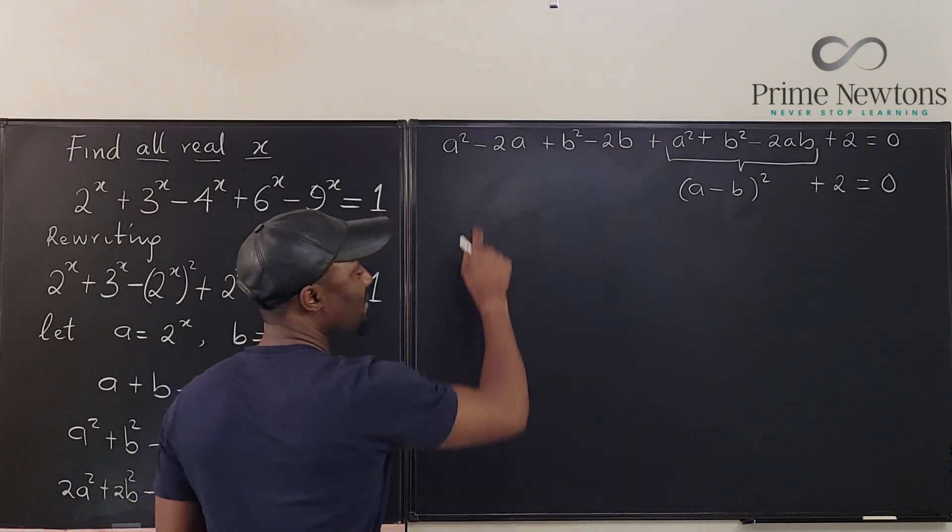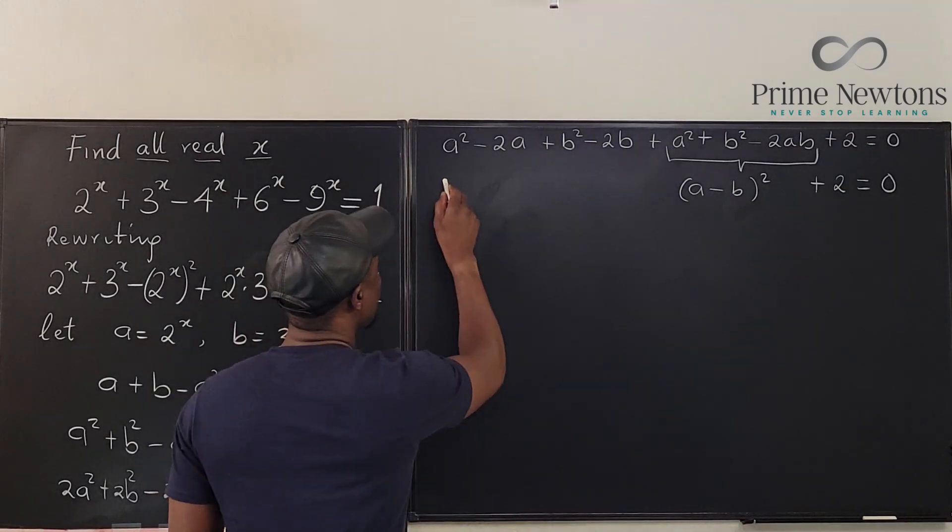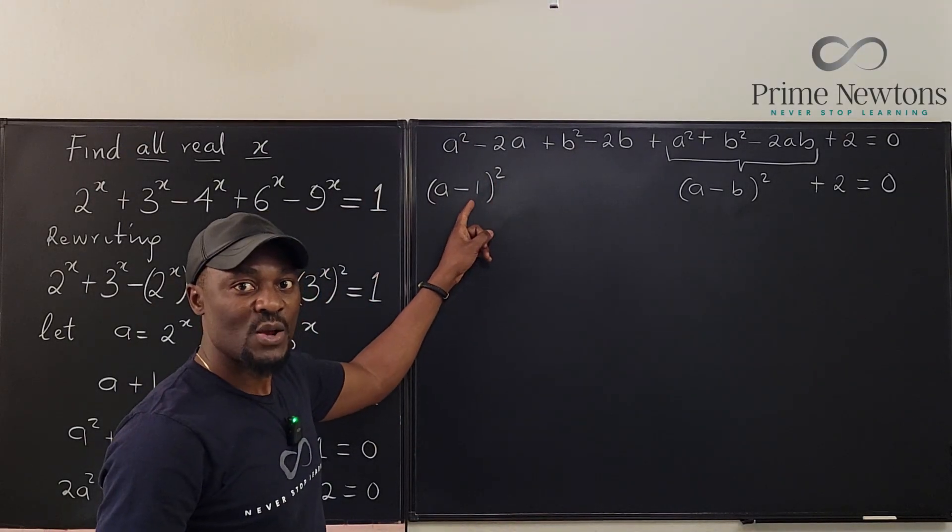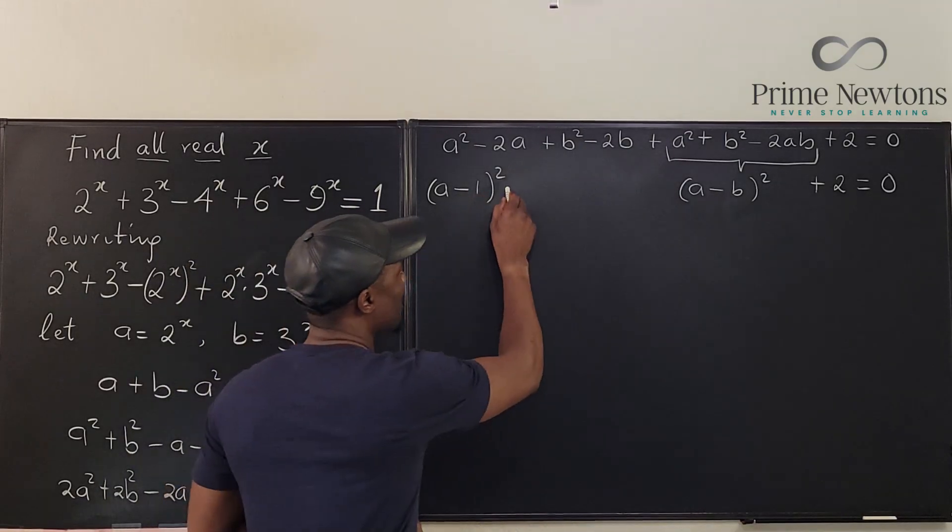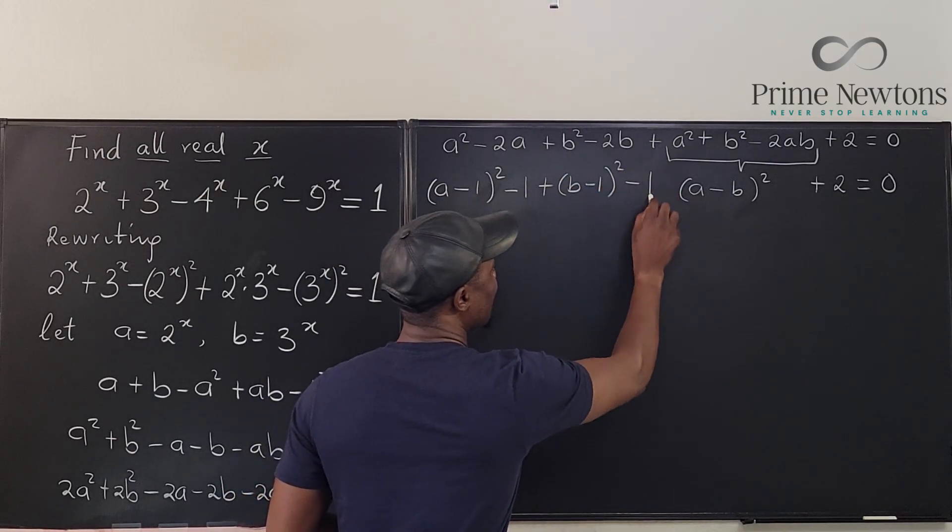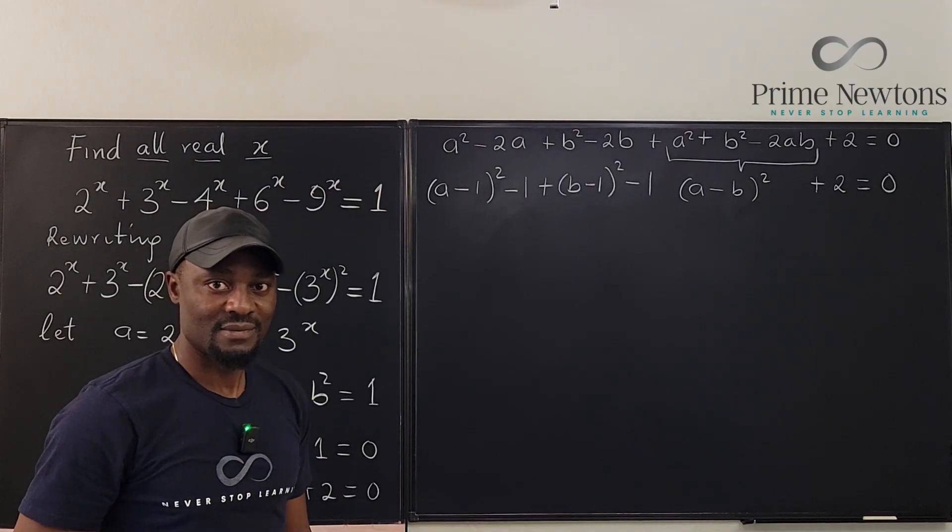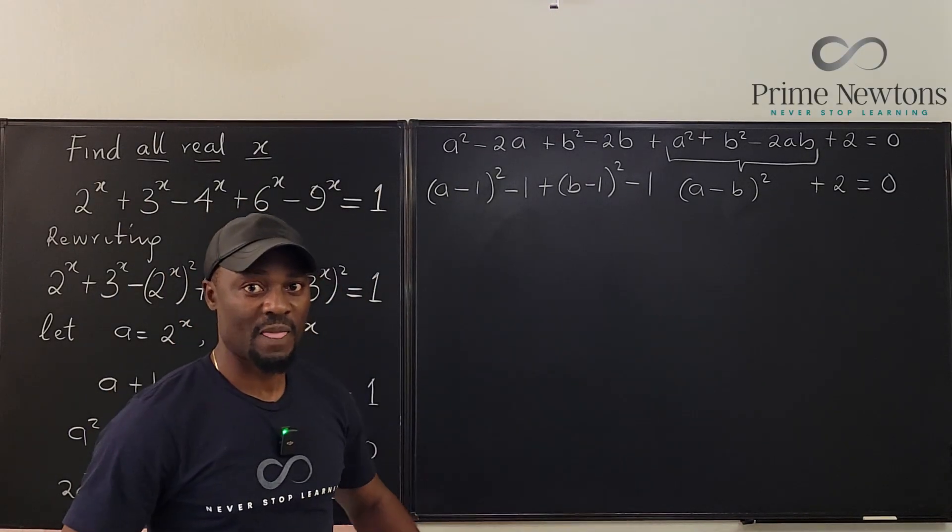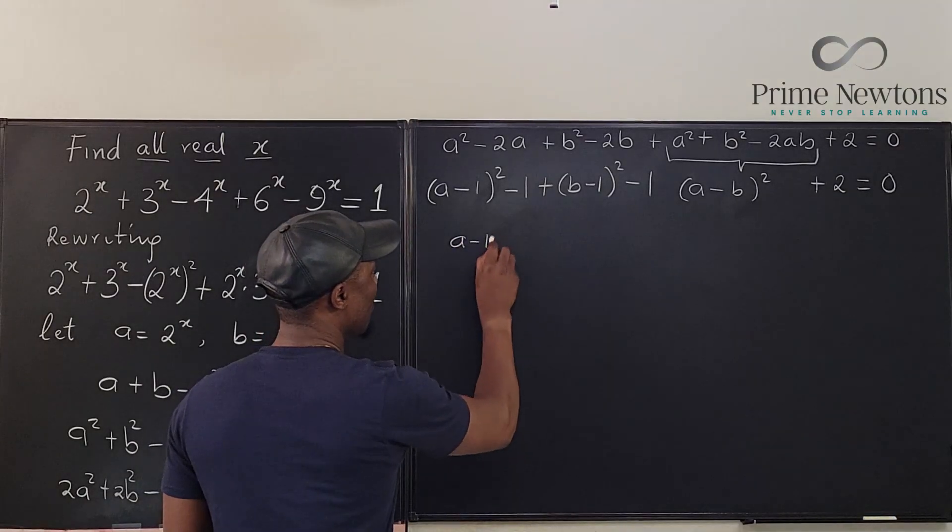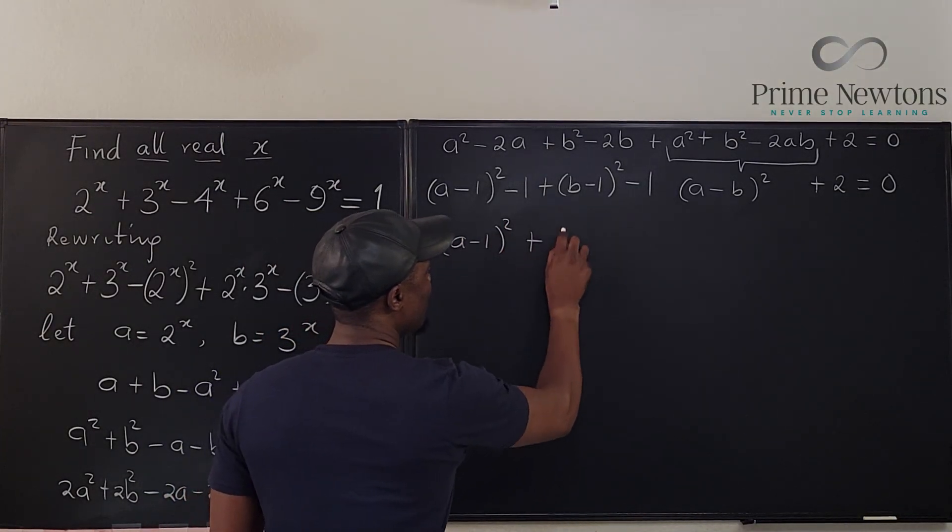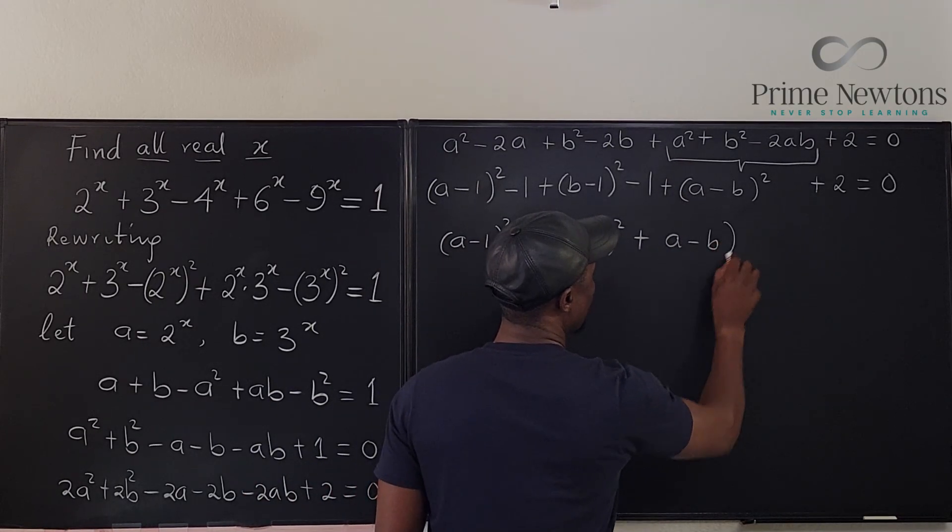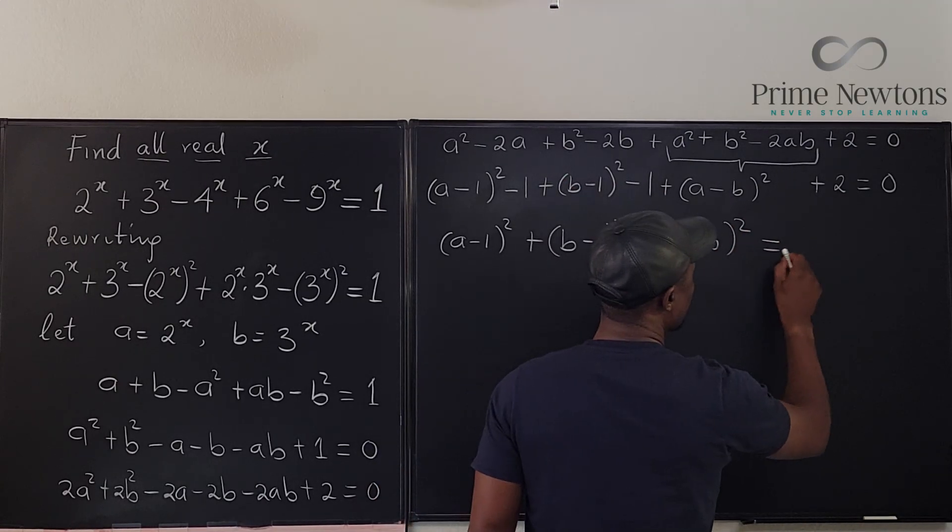We can complete the squares. Divide the coefficient by 2 to get 1, so this is (a-1)^2, but we have to subtract the excess 1 we generated. Same for b: (b-1)^2 minus 1. Based on what we have, -1 - 1 + 2 cancels out. What is left is (a-1)^2 + (b-1)^2 plus (a-b)^2 = 0.